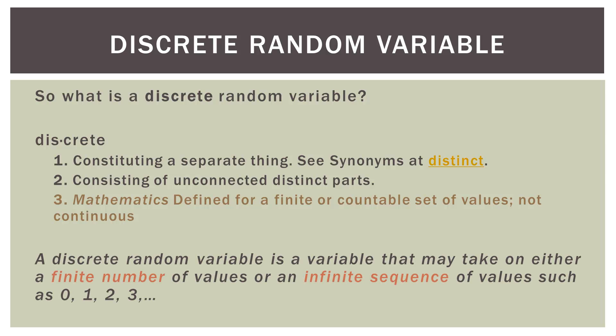Just remember: a discrete random variable is a variable that may take on either a finite number of values — like one, two, three, four, five, six, or whatever — or an infinite sequence of values starting at zero and going up. Depending on the situation there could also be negative random variable values.